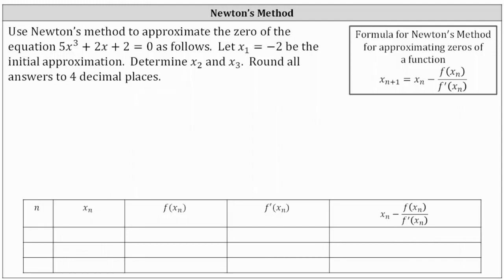Because we're trying to find the zero of the equation five x cubed plus two x plus two equals zero, the function f of x is five x cubed plus two x plus two. We would also need the derivative function, which in this case f prime of x is equal to 15 x squared plus two.